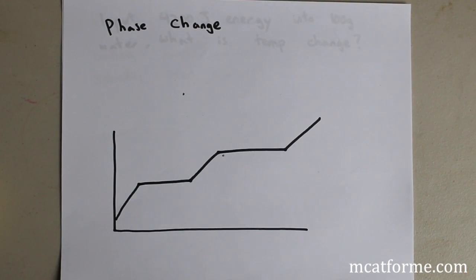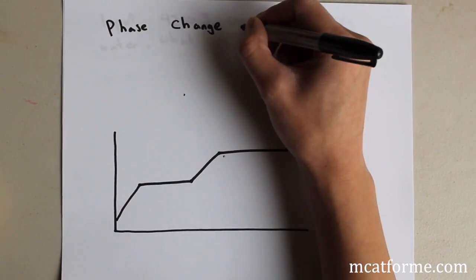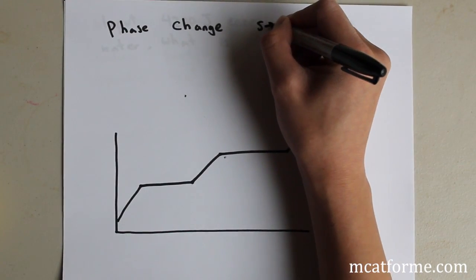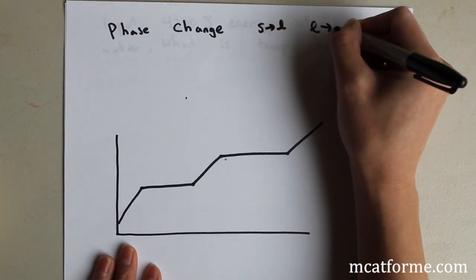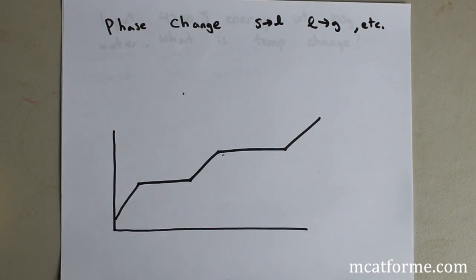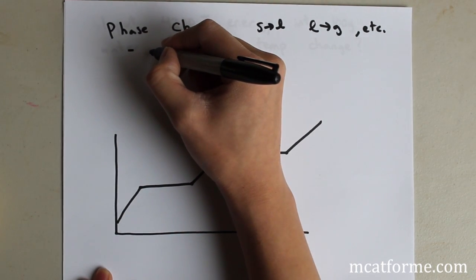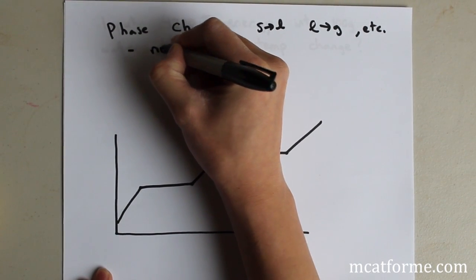That's the basics of solid, liquid, and gas. Next we're going to look at phase changes — you can change between solid and liquid, and liquid and gas. But what actually happens during these phase changes? This is very important: there is no temperature change during a phase change.